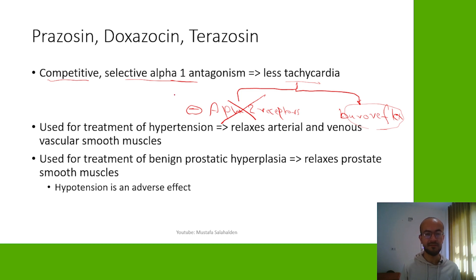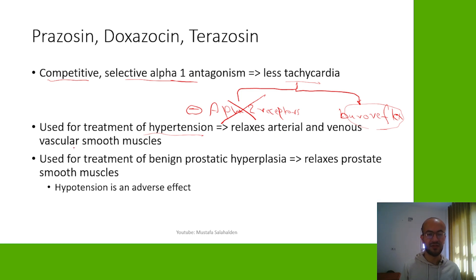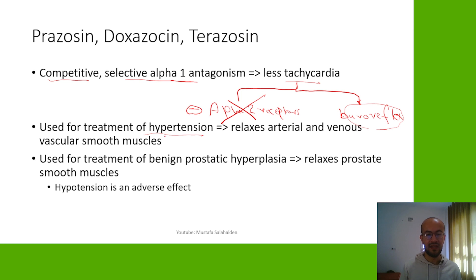Another fact about these drugs is that they are used in the treatment of hypertension, because they relax arterial and venous vascular smooth muscle. Since arterial and venous vessel walls have alpha-1 receptors, blocking them gives us a decrease in blood pressure, which is beneficial for the treatment of hypertension.